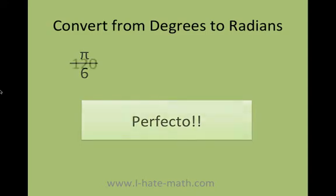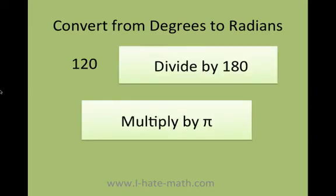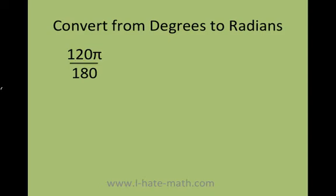Let's do another one. Let's say that we need to convert 120 degrees to radians. Again, divide by 180 and then multiply it by pi. So we do it and we can go ahead and just simplify.